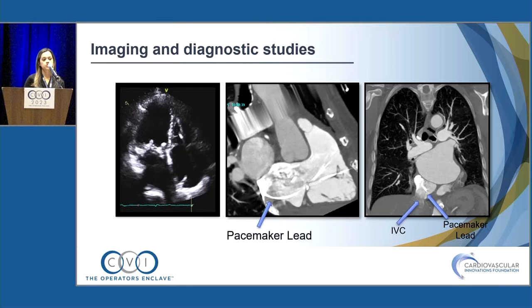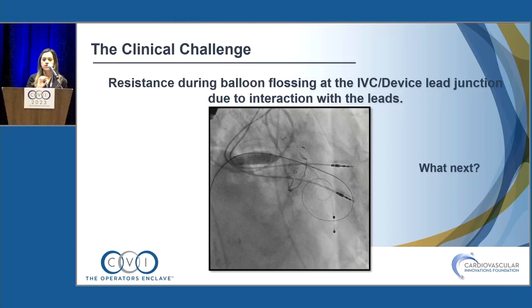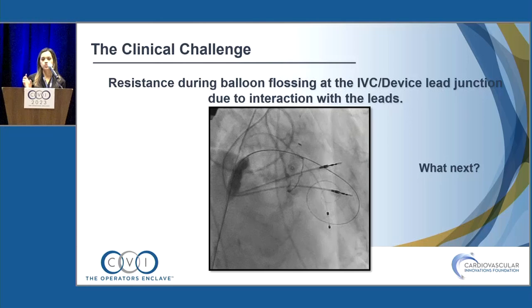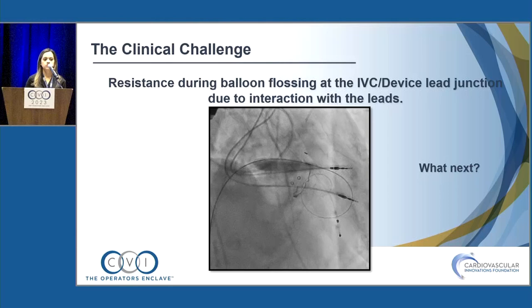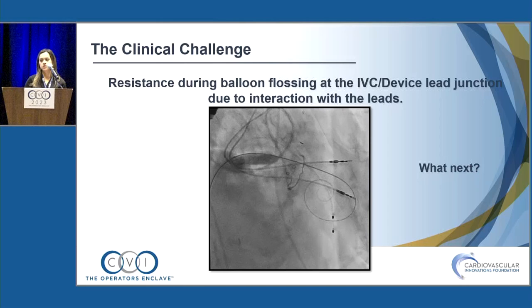The plan was transcatheter valve replacement with a 29 plus 2 millimeter Sapien valve. Pre-procedural imaging included an echocardiogram showing mitral bioprosthetic degeneration and a CT scan demonstrating the pacemaker leads going down to the IVC.